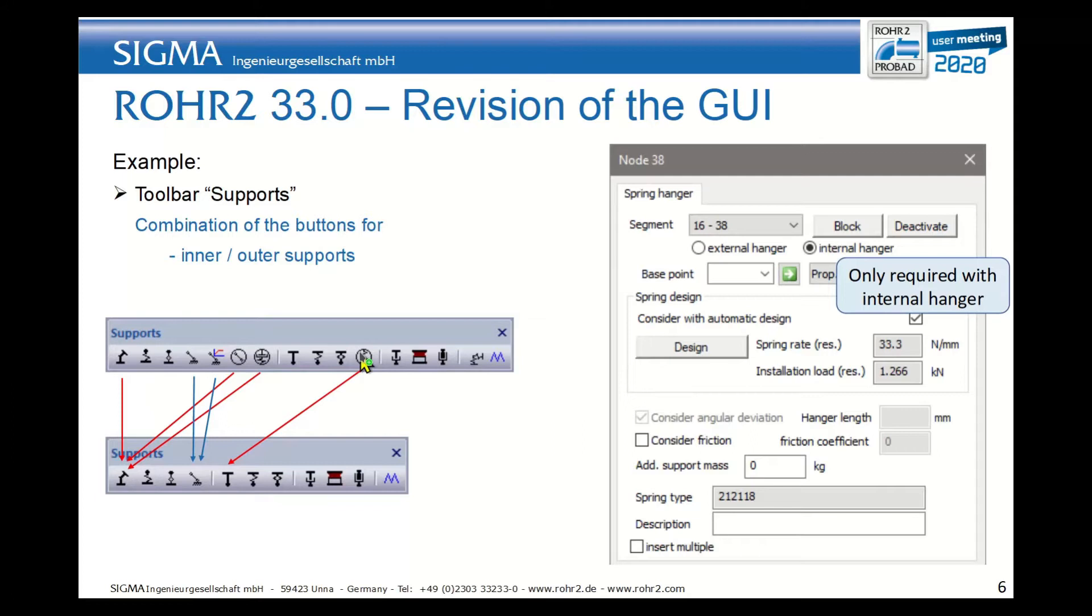As both external and internal hangers or supports share a lot of information and only have a slight difference, they are all now regrouped in the same window. And you can choose in the window if you want to do an external hanger or an internal hanger. For the internal hanger, you have to specify in addition the base point and the property of the auxiliary member.